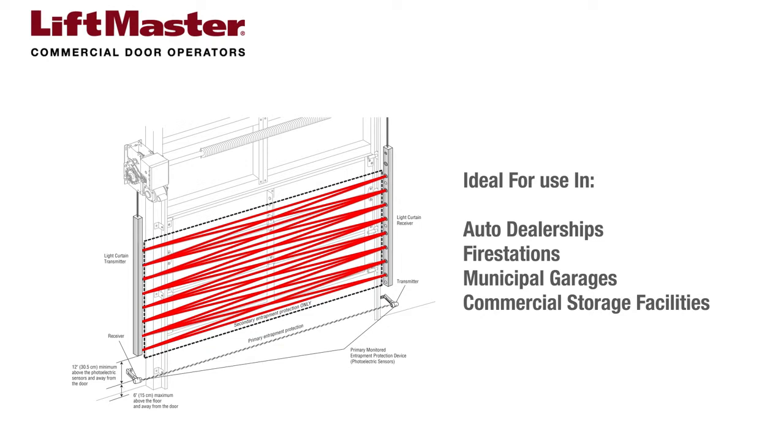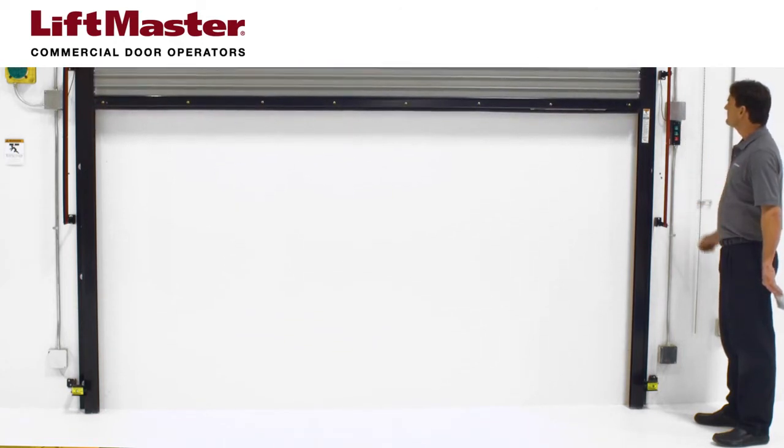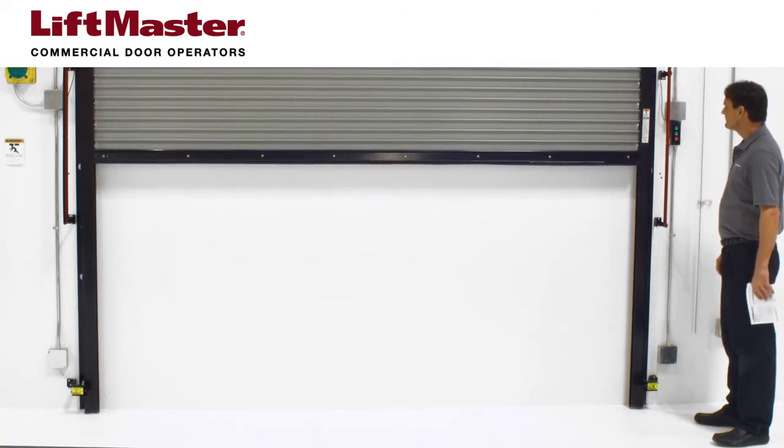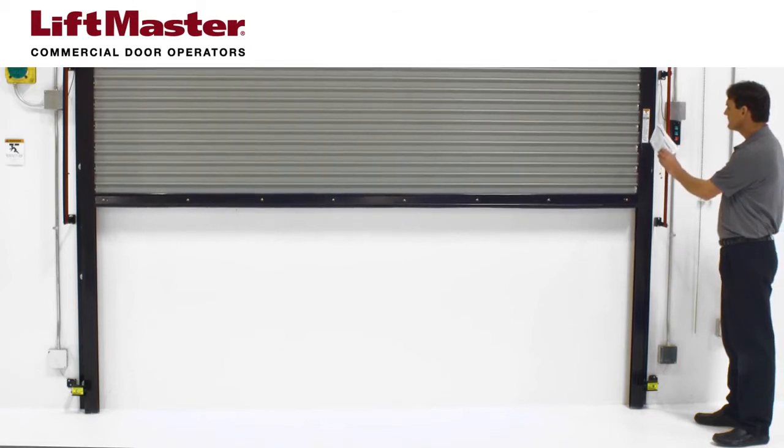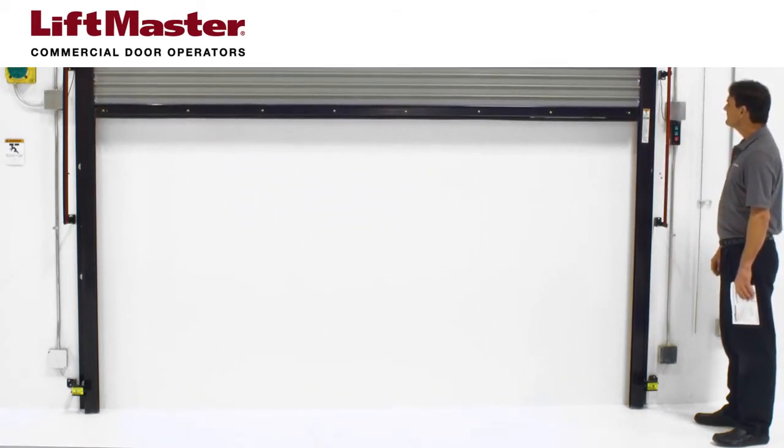When properly connected and aligned, the LC36A light curtain will detect an obstruction in the path of its vertical plane of beams. If an obstruction breaks the plane of beams while the door is closing, the operator will stop and typically reverse to the full open position.